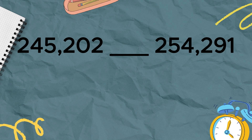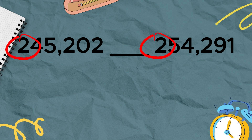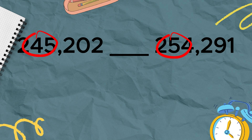The first digit of each number is 2. If they have the same first digit, proceed by comparing the second digit of the two numbers. What are the numbers in the second digit? Yes, we have 4 and 5.